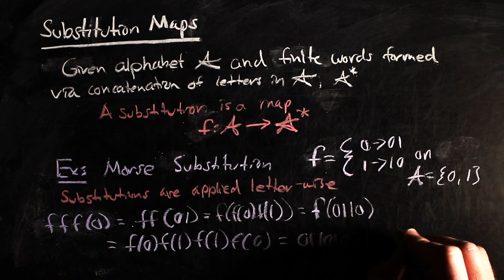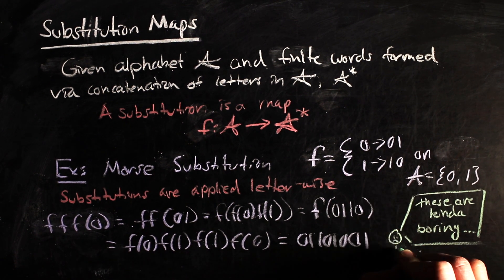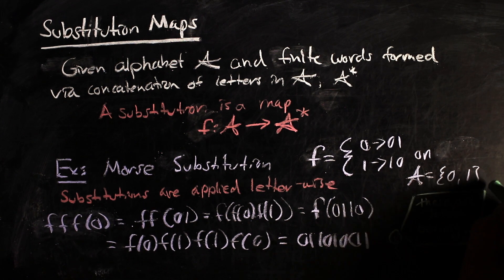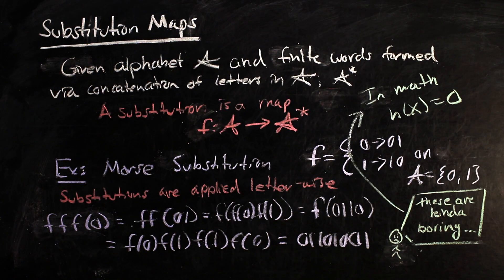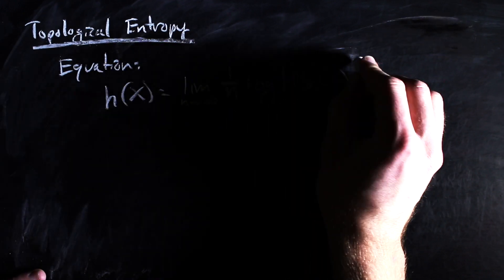Shifts generated by substitution maps turn out to be incredibly restrictive and not really chaotic at all in some sense. This is described by the fact that they have topological entropy zero. Some symbolic dynamicists are really interested in topological entropy. I'll go ahead and write the formula here, but I'll leave a link below to an introduction to the value.